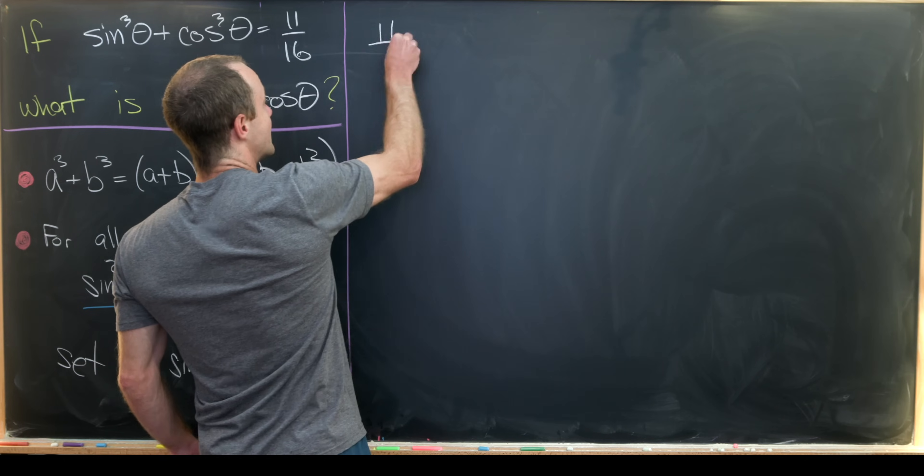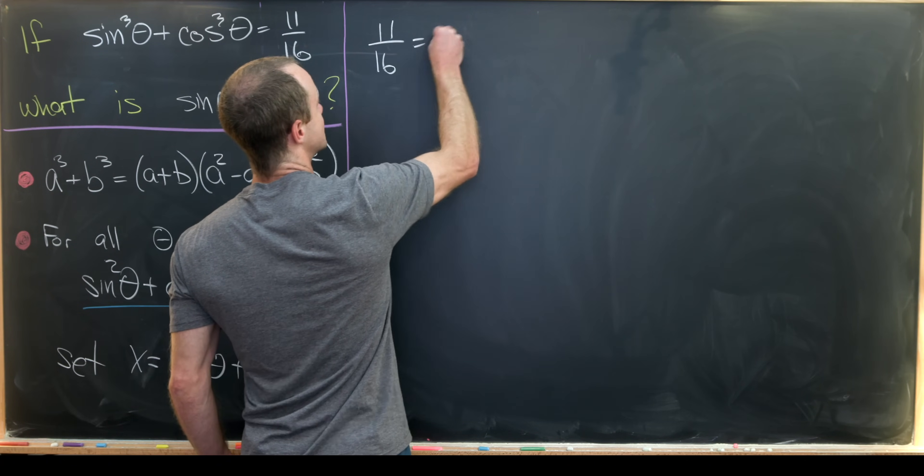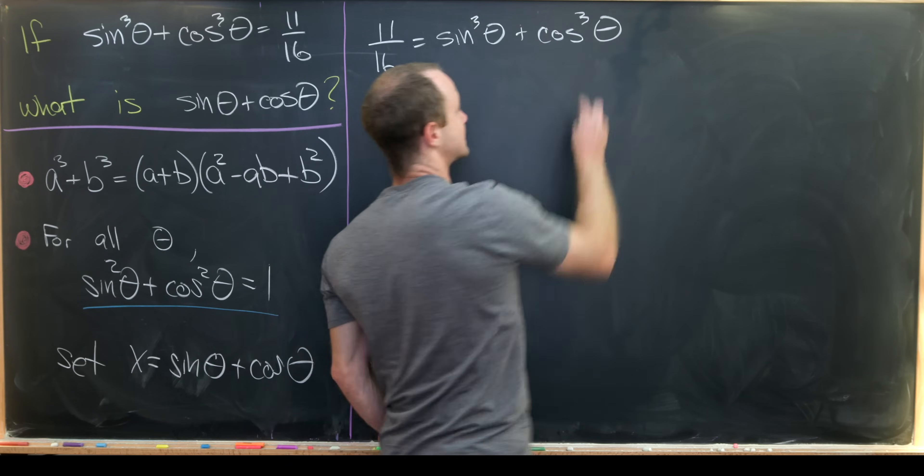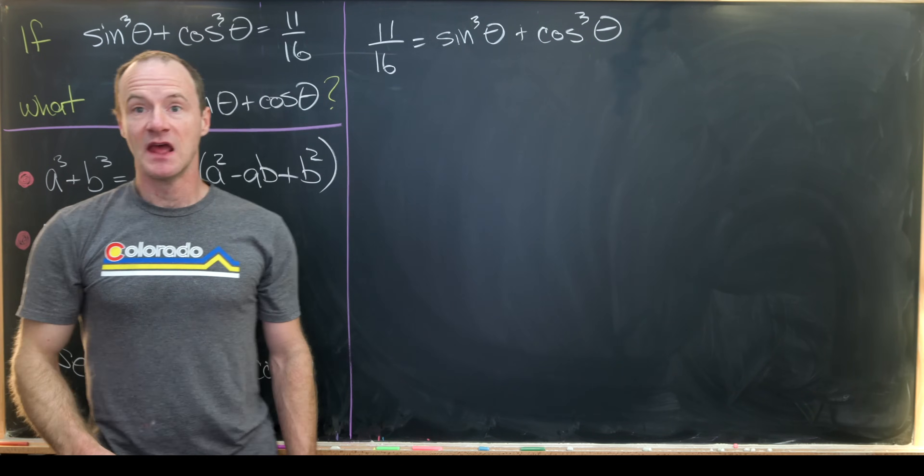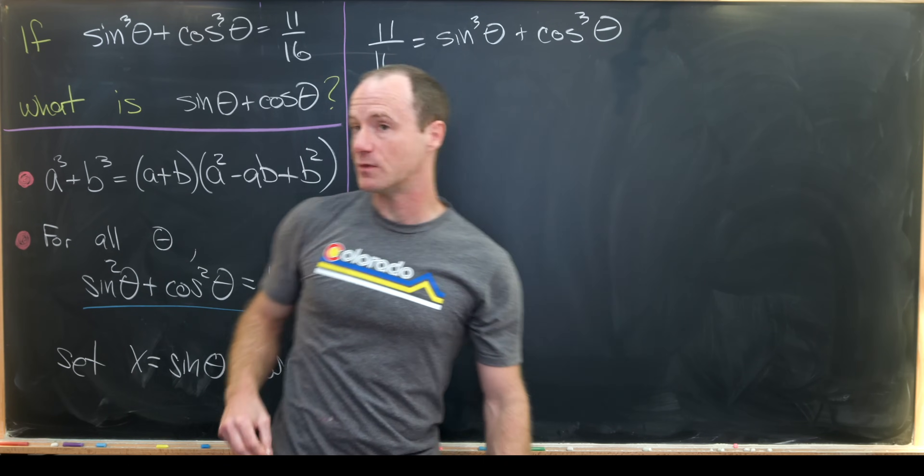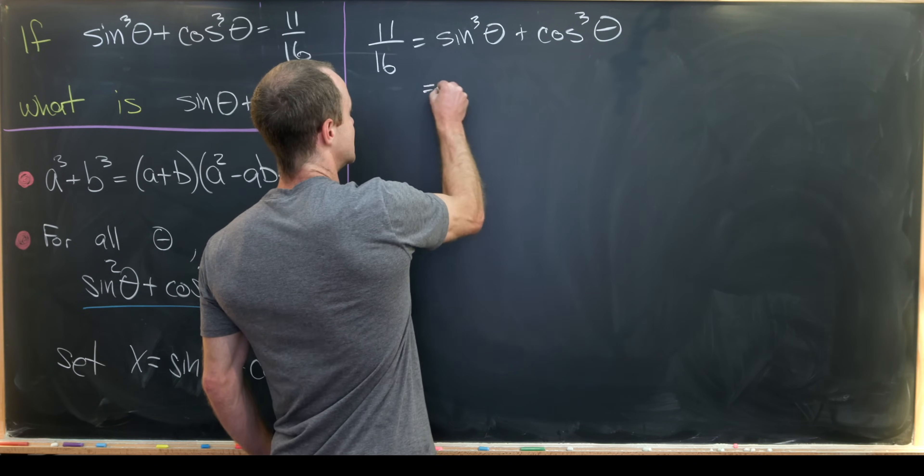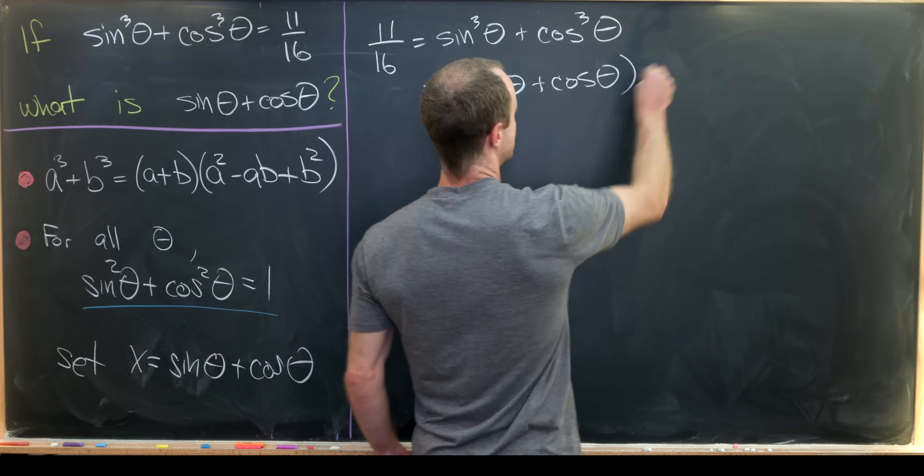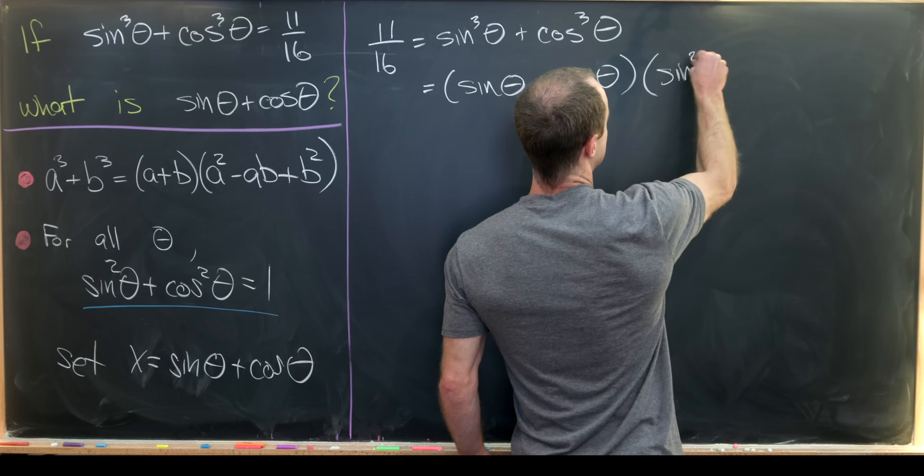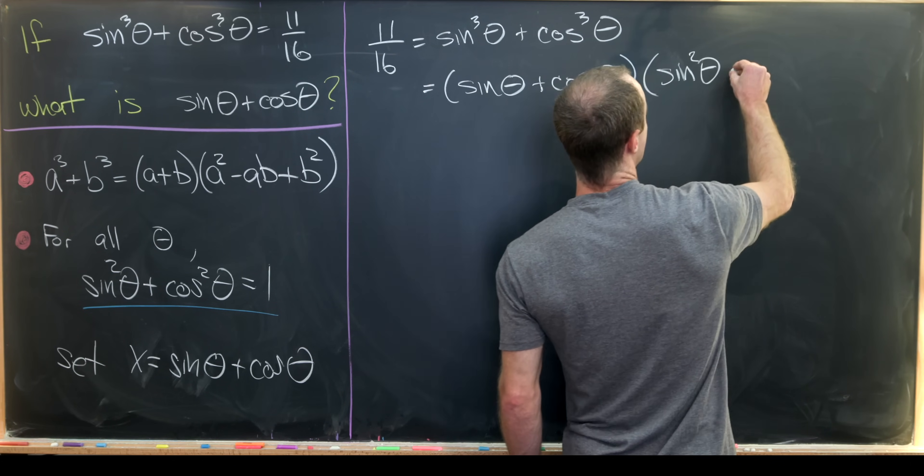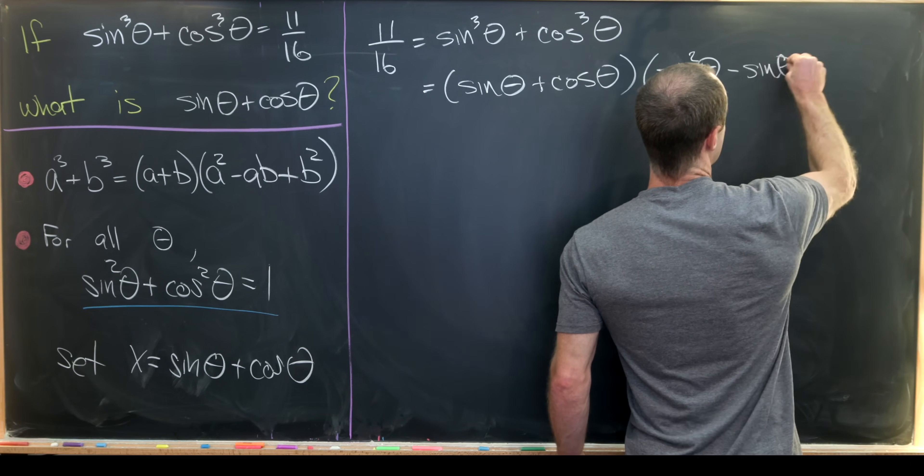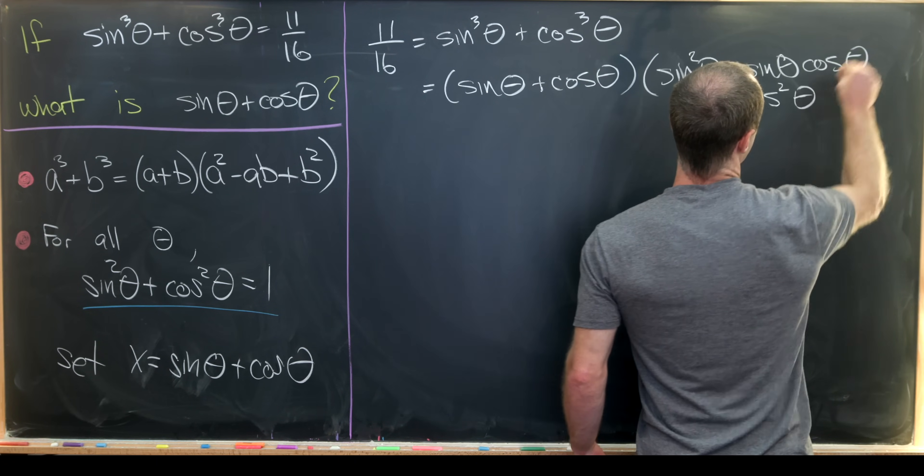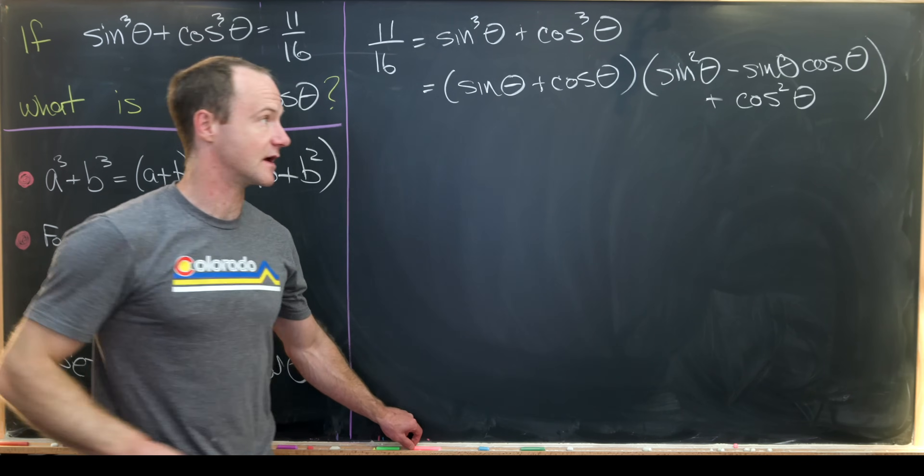Now let's get into it. I'll start with 11 over 16 equals sine cubed theta plus cosine cubed theta. So that's given. And now let's use this sum of cubes factorization. This factors like sine theta plus cosine theta times sine squared theta minus sine theta cosine theta plus cos squared theta.